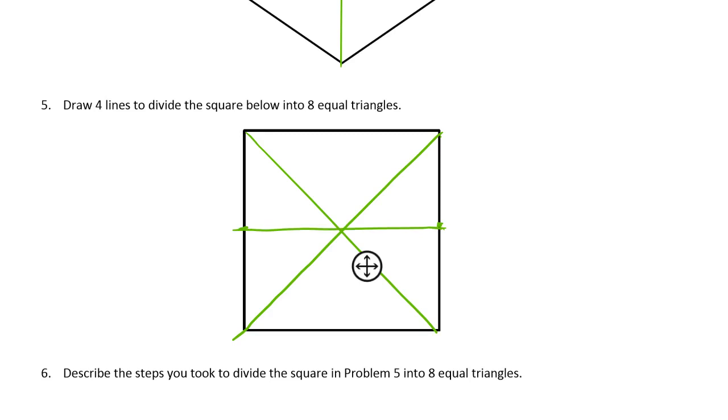We'll do the same thing going vertically. That's about the middle. And that looks like it's about the middle. And those should go through the X that we made with the first two lines. Now all those triangles are equal. That's eight equal triangles.